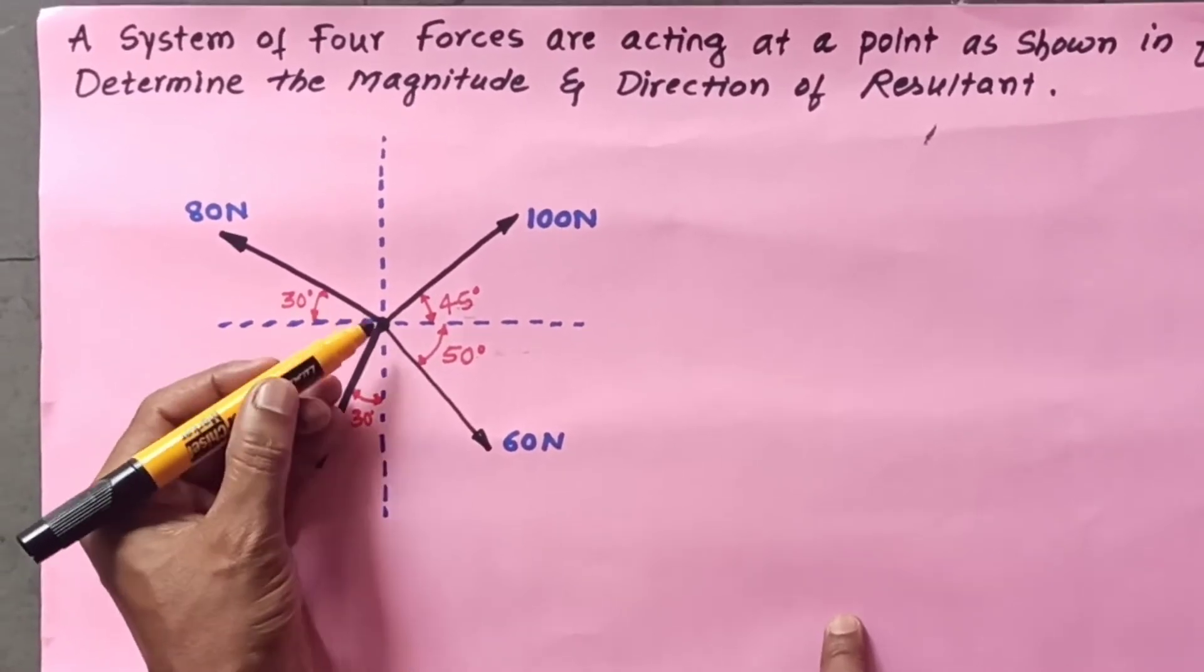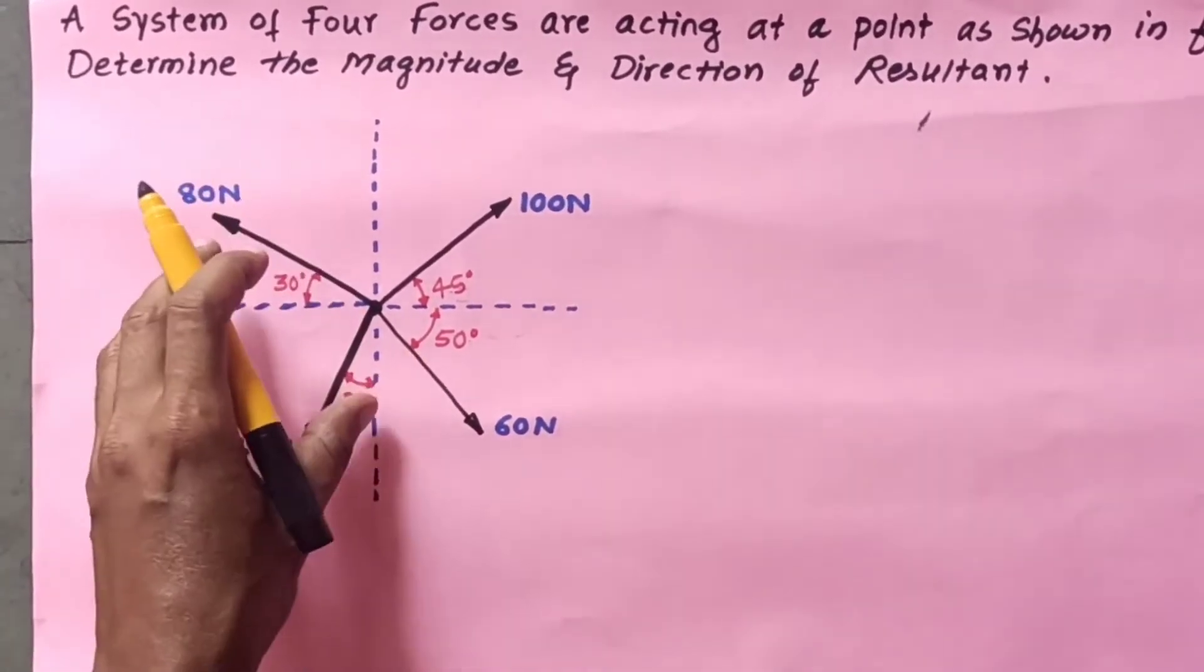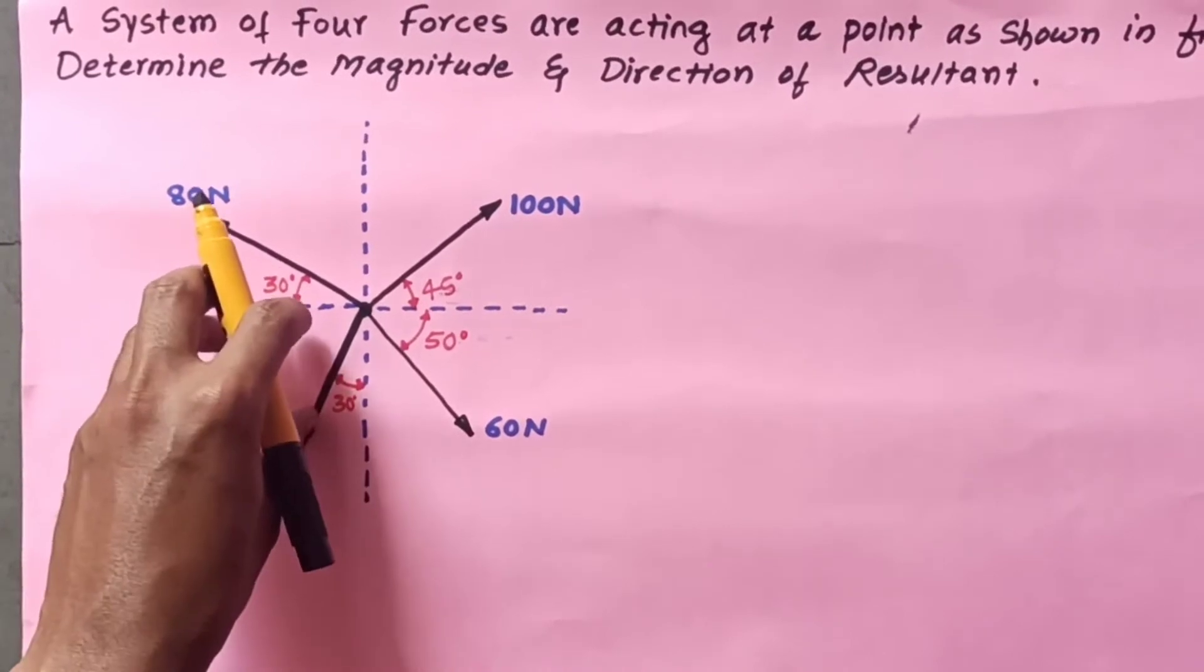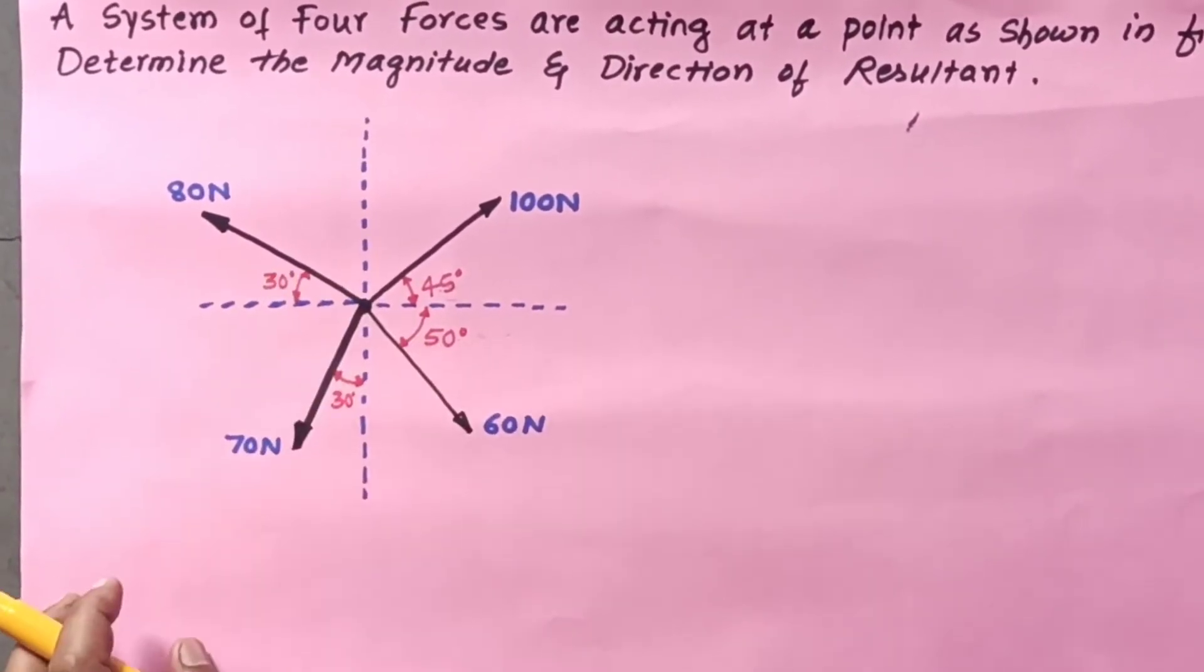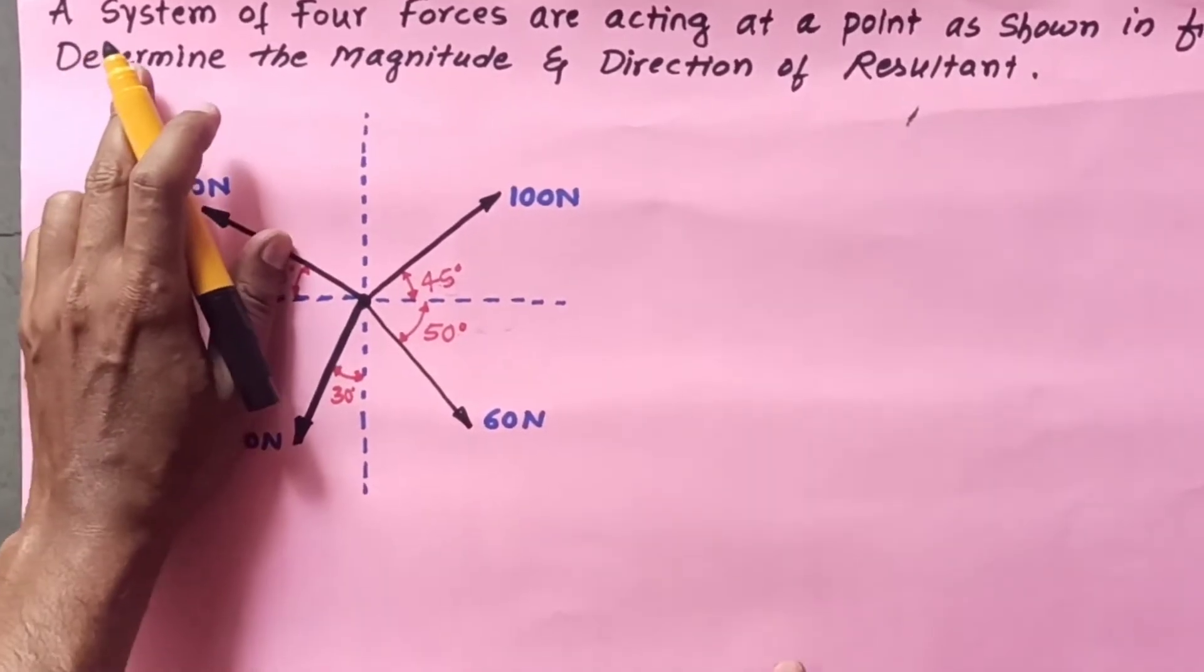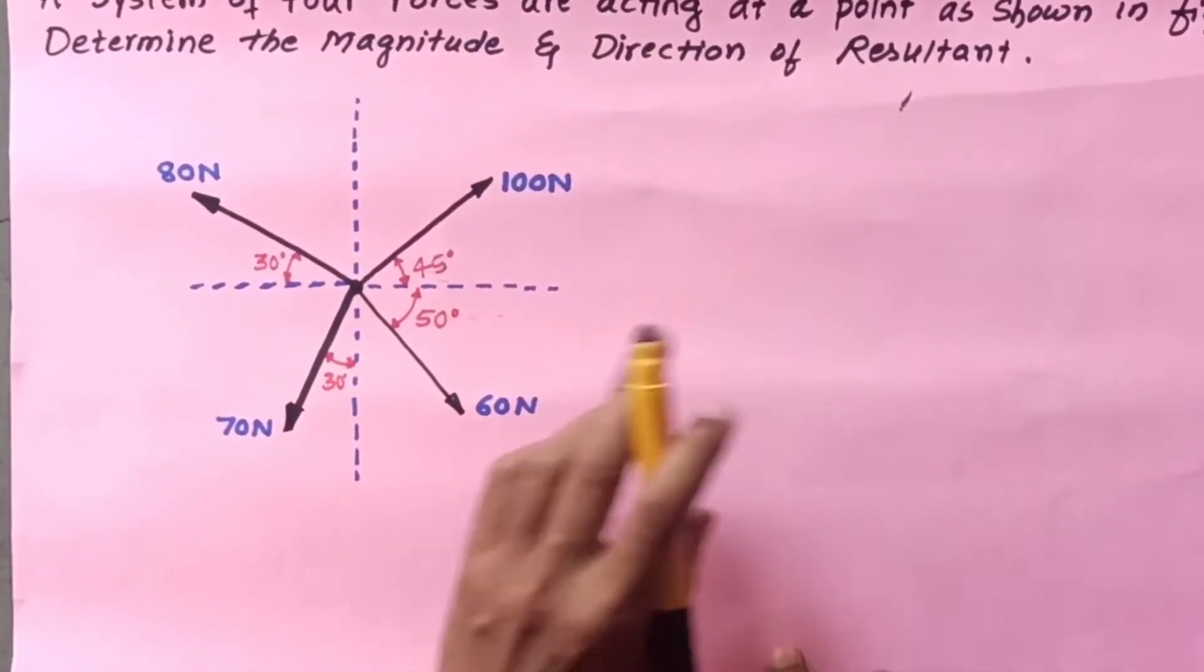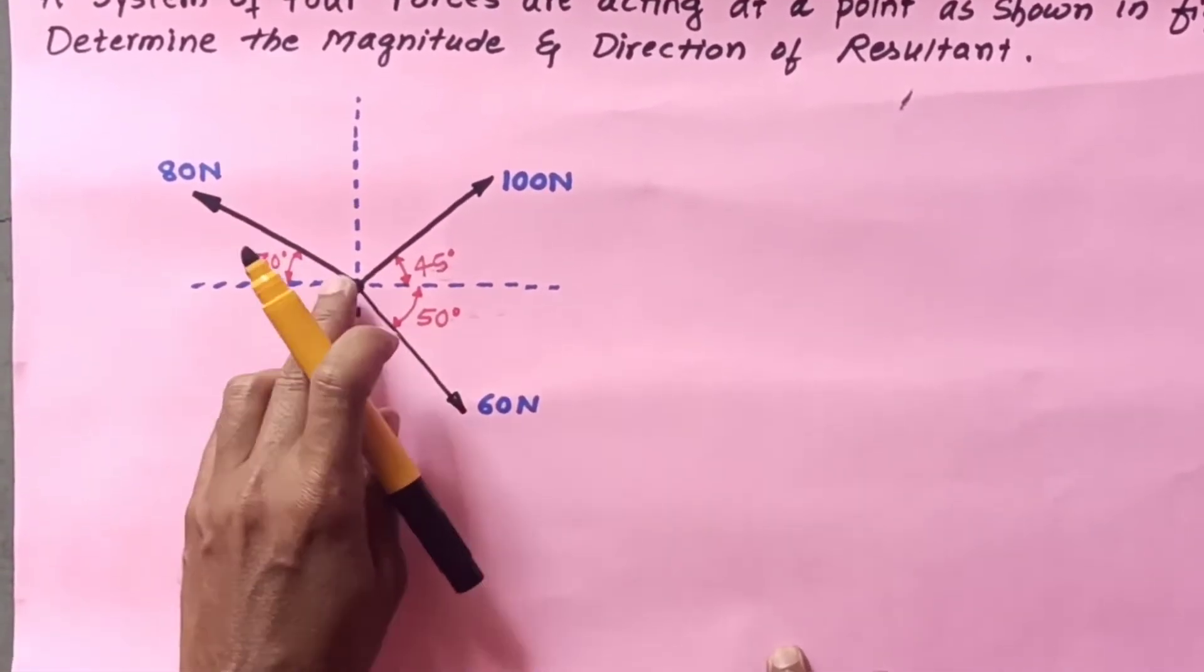Concurrent means when a number of forces are meeting or joining at a point. All the forces are diverging from this point, so this is an example of a concurrent coplanar system of forces. Here we have the question: a system of four forces are acting at a point.